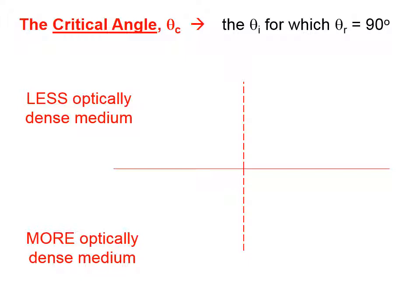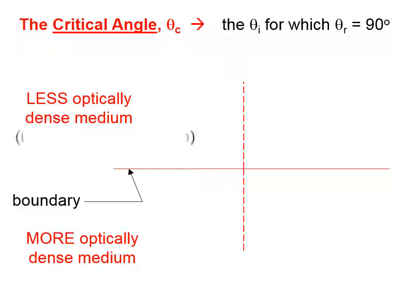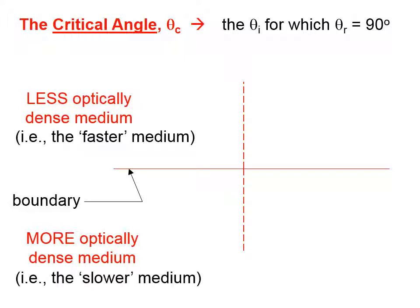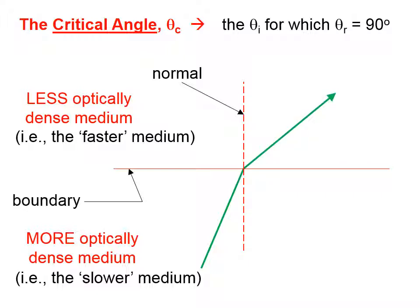Let's take an example here. The solid line indicates the boundary between a less optically dense medium and a more optically dense medium. The dashed line indicates the normal. On the top of this picture we have the less optically dense, or the faster medium, and down below we have the slower medium. If light originates in the slower medium, it's going to bend away from the normal when it emerges into the faster medium.